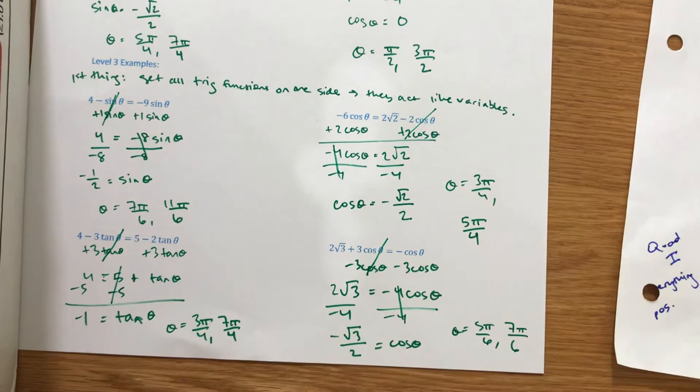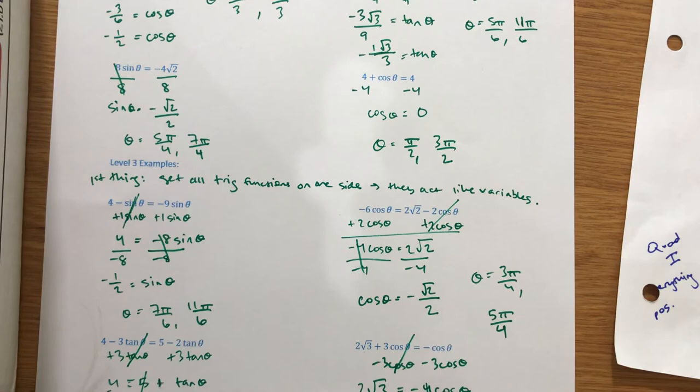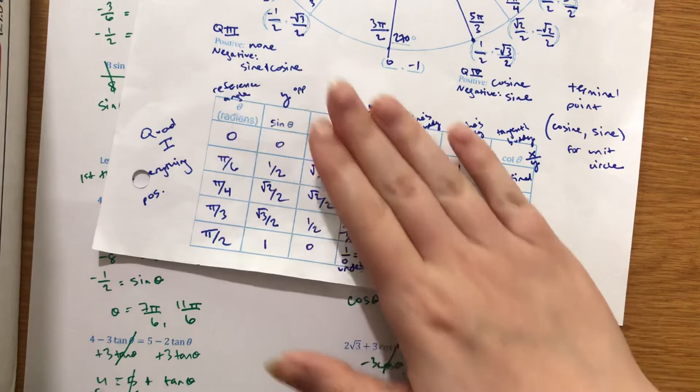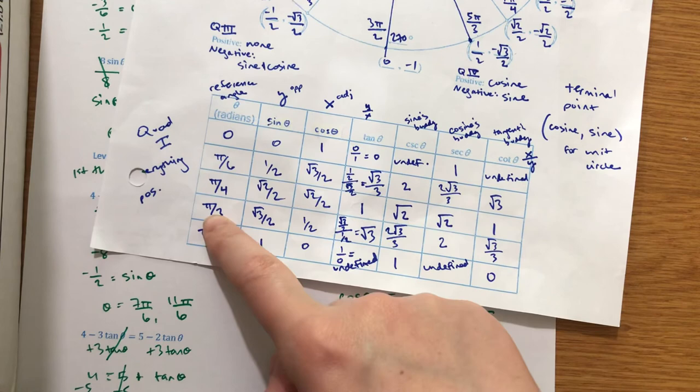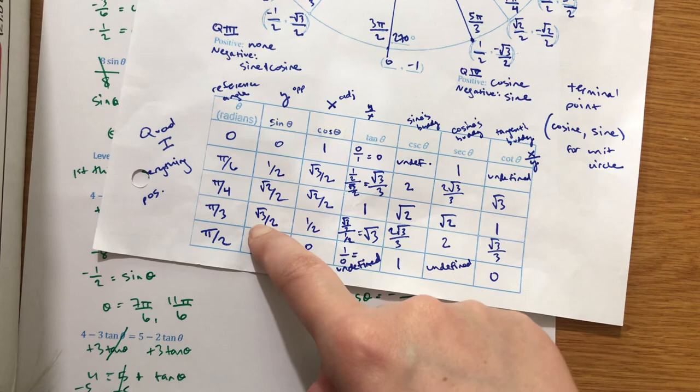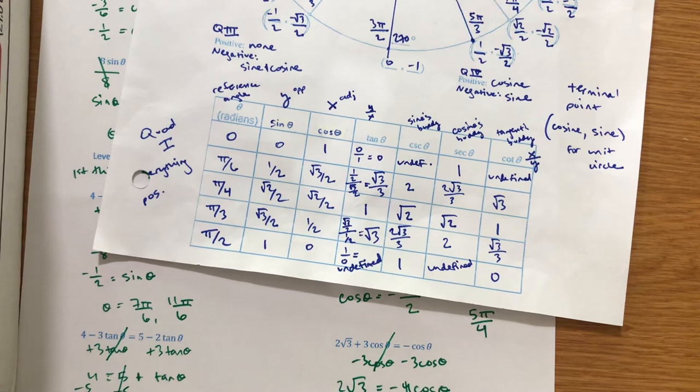That's all we're doing this week — getting the trig function alone and seeing what it equals. What it equals should always be something on your unit circle chart. You find the radian that matches: like when is sine root 3 over 2 — that's pi over 3 values. Then ask yourself, do I have positive root 3 over 2 or negative root 3 over 2? That narrows it down to two radians, because sine is positive in two quadrants and negative in two. Same thing with cosine and tangent — just make sure you're checking the negatives and finding the correct spots.